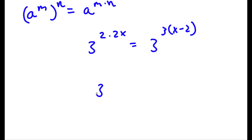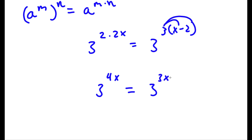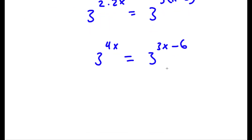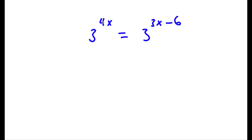2 times 2x is 4x, so I have 3 to the power of 4x is equal to 3 to the power of 3x minus 2. I can simply distribute the 3: 3 times x is 3x, and 3 times negative 2 is negative 6. So now I have 3 to the power of 4x is equal to 3 to the power of 3x minus 6.